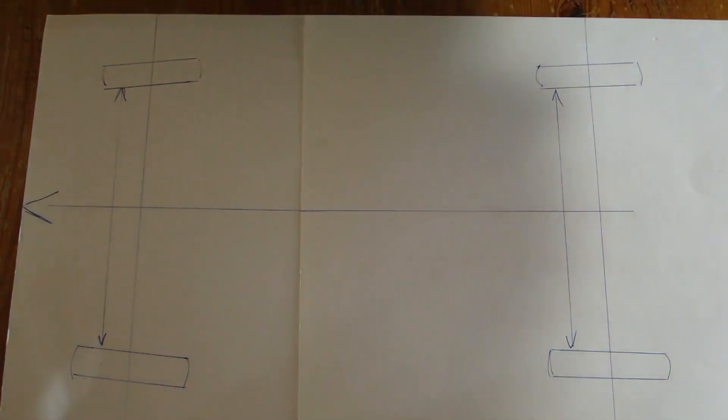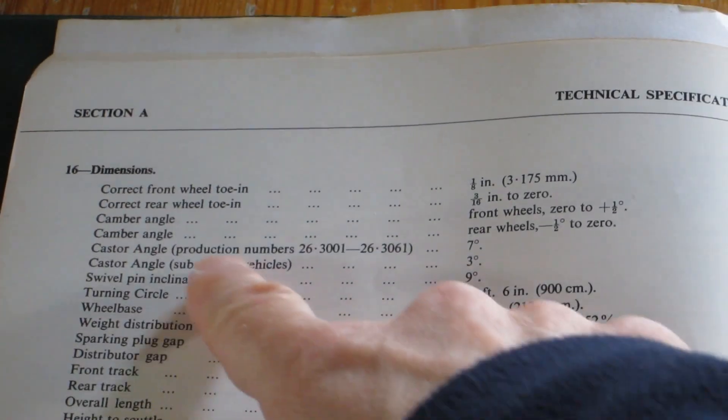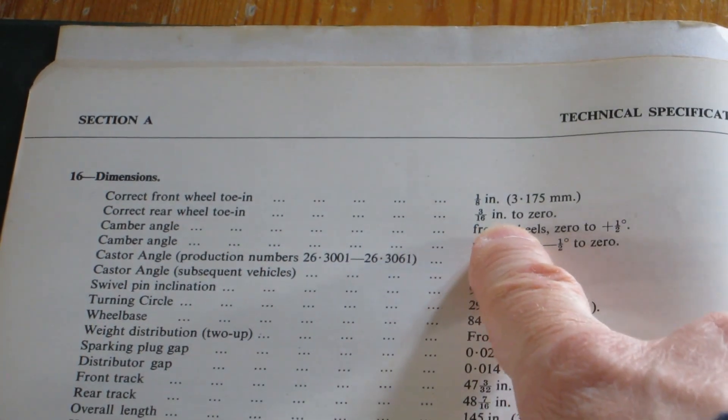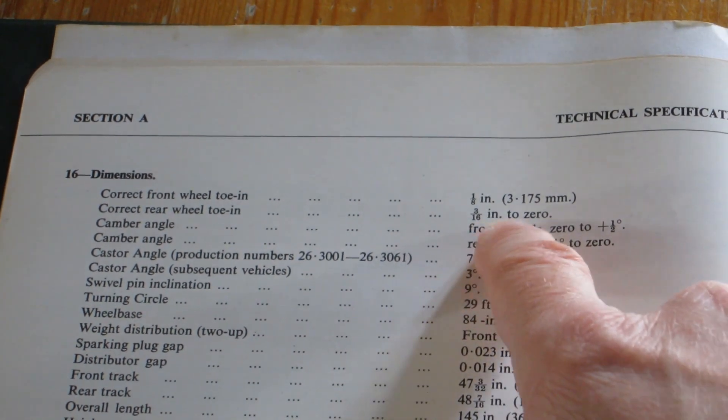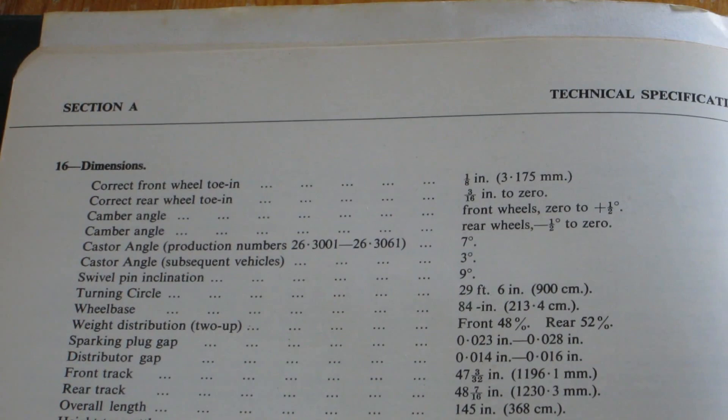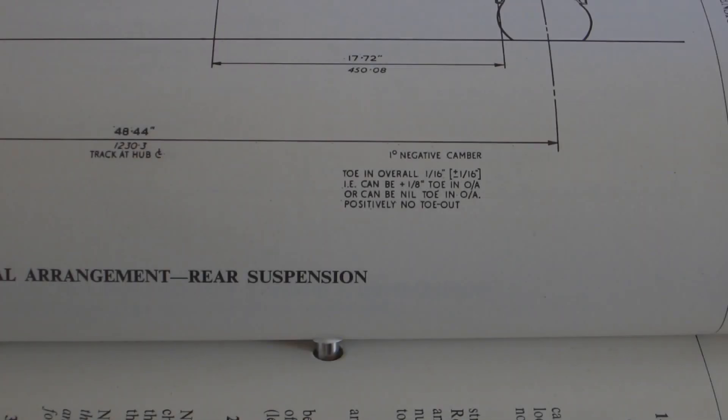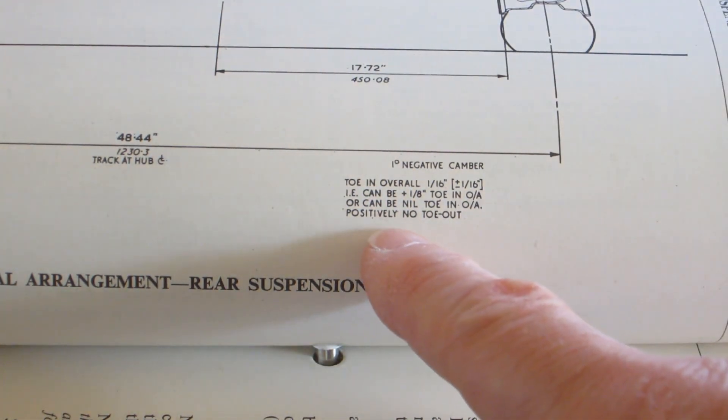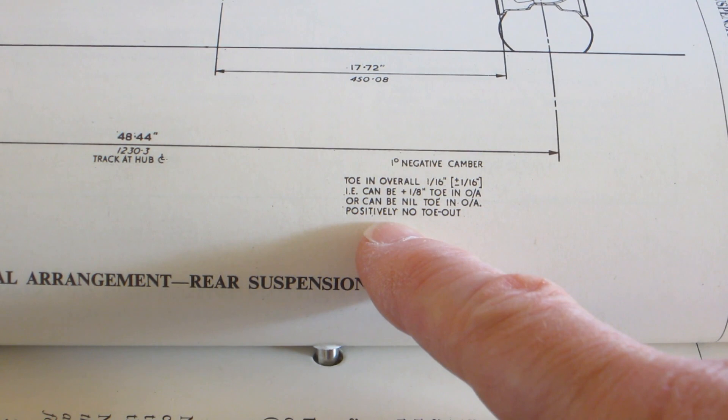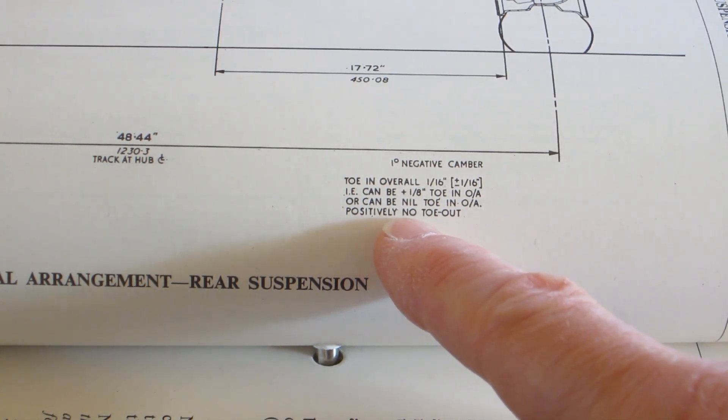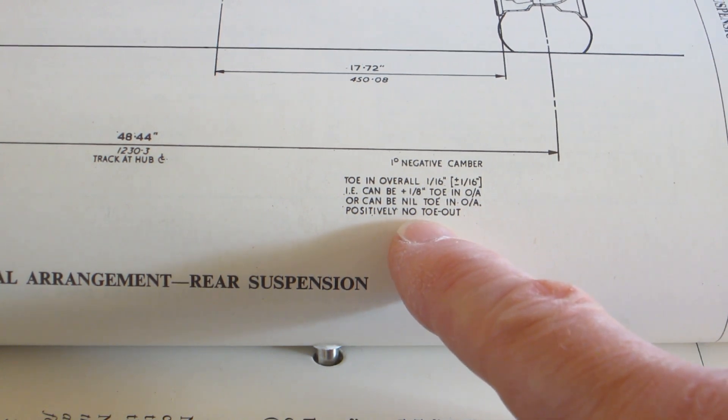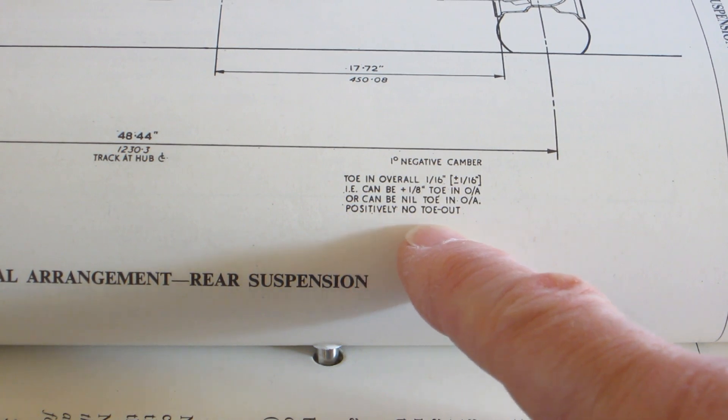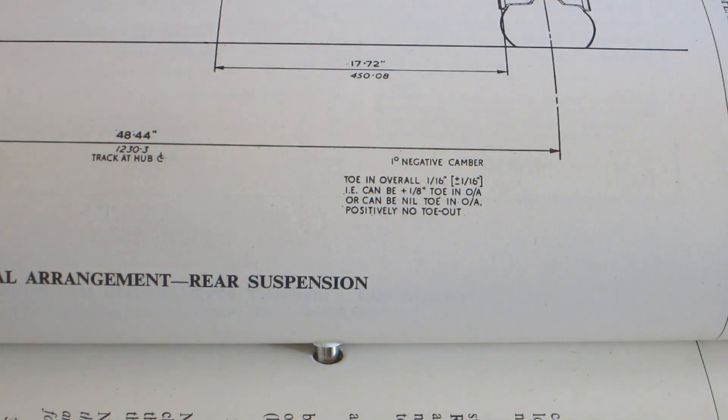The book, let's just have a quick look at the manual. So here we go, specification, correct rear wheel towing. What does that say? It says three sixteenths of an inch to zero in that list. And there's also a diagram. Let me show you the diagram. So in this rear suspension section of the manual, on this drawing of the rear suspension, it says here towing overall one sixteenth of an inch plus minus one sixteenth of an inch, i.e. can be plus one eighth toe in overall or can be nil toe in overall. And then at the bottom, positively no toe out. So it could be that they are perfectly aligned and have no toe in at all or some toe in up to that maximum value, but definitely not towing out.